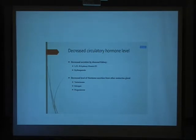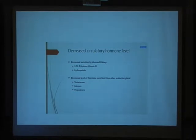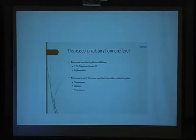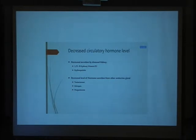There is also decreased circulating hormone levels in chronic kidney disease, like vitamin D and insulin-like growth factor. There is decreased hormone secretion from other endocrine glands, like testosterone, which is secreted from the testis; estrogen, secreted mainly from the ovary; and progesterone. These hormones are decreased in patients with chronic kidney disease. This altered data will be summarized at the end of the lecture.